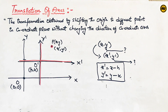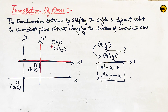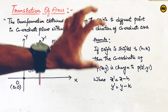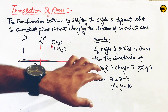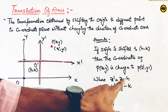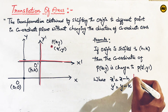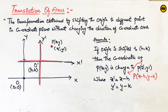This formula is important. If the origin is shifted to point (h, k), then the coordinates of point P(x, y) in the original system change to P(x-dash, y-dash) in the new system, where x-dash equals x minus h and y-dash equals y minus k. You can prove this easily.